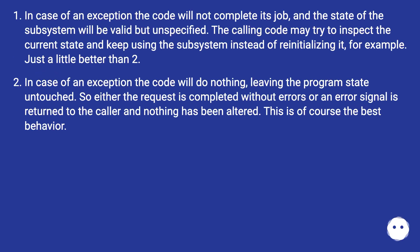In case of an exception, the code will not complete its job, and the state of the subsystem will be valid but unspecified. The calling code may try to inspect the current state and keep using the subsystem instead of reinitializing it — just a little better than level 2. In case of an exception, the code will do nothing, leaving the program's state untouched. So either the request is completed without errors, or an error signal is returned to the caller and nothing has been altered. This is, of course, the best behavior.